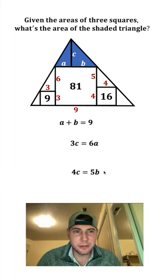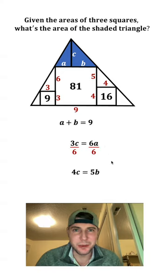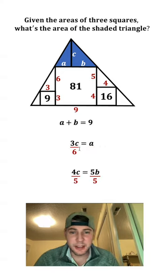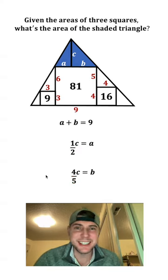Let's get A and B alone. So for this one, let's divide both sides by 6. And for this one, let's divide both sides by 5. 6A over 6 is A, and this becomes 1 half C. And then 5 over 5B becomes B, and this becomes 4 fifths C.